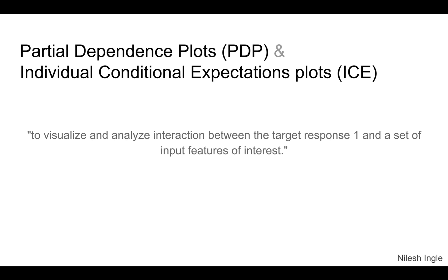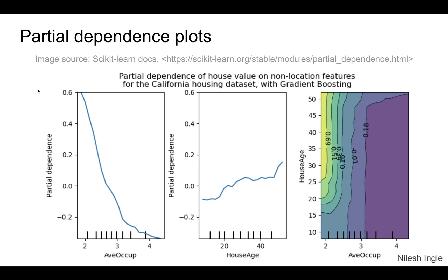Looking at the first plot, on the left-hand side we have house value. We can see the partial dependence of two features — average occupancy and house age — on house value. As average occupancy increases, house value seems to go down, and that relationship is almost linear up to an occupancy of three, after which there is a slight curve. House age seems to increase in the fashion shown.